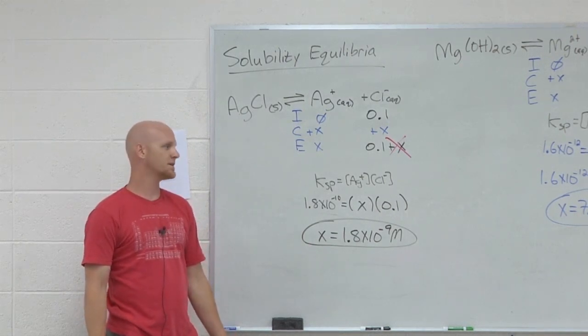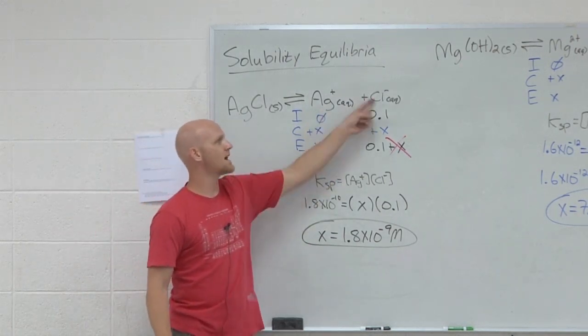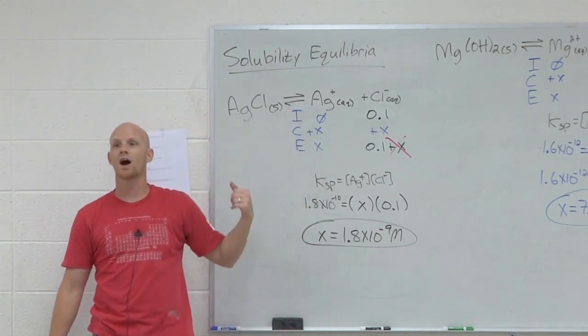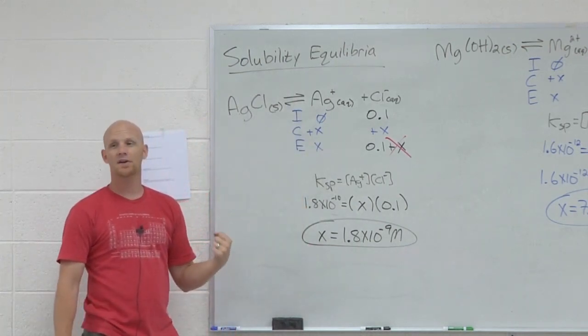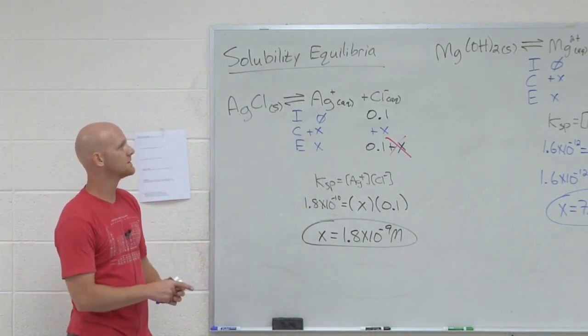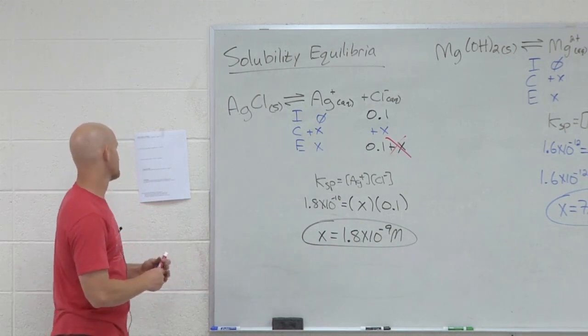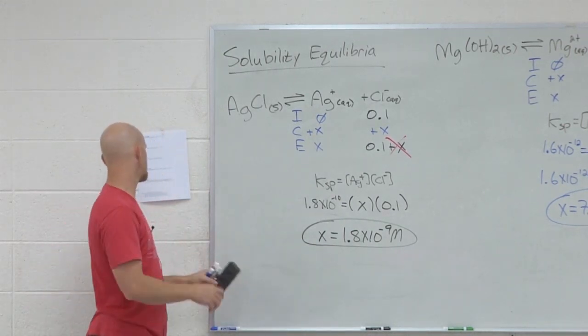With a little bit of HCl in there, the solubility is now roughly 10,000 times lower. Big decrease in solubility here, because we had one of these ions already present in the solution, a common ion present. We call that the common ion effect.